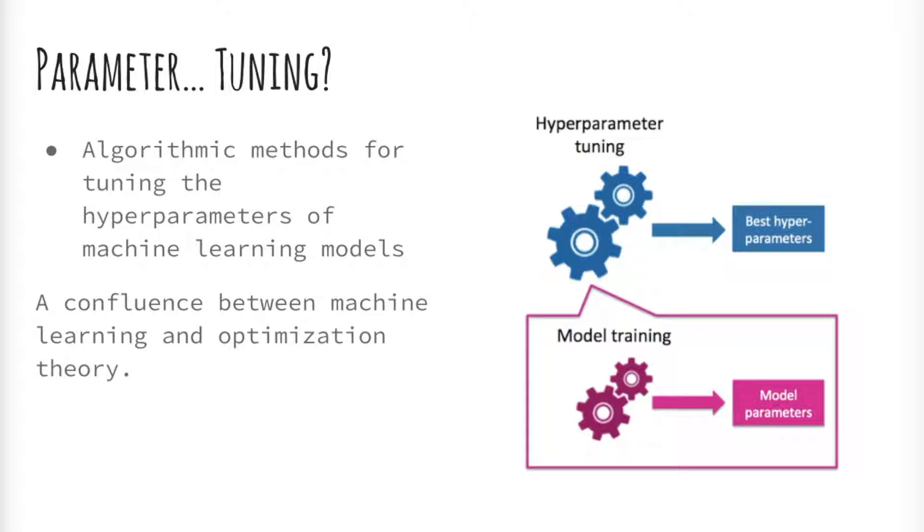Compared with neural networks configured by pure grid search, it can be found that random search over the same domain is able to find models that are as good or better within a small fraction of the computation time. Granting random search the same computational budget, random search finds better models by effectively searching a larger, less promising configuration space.